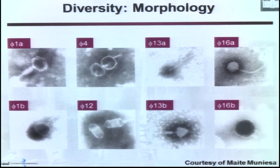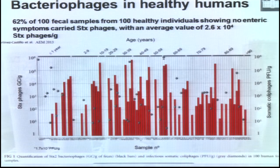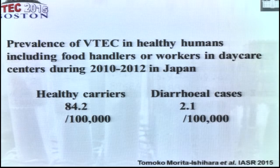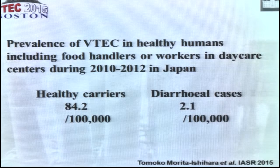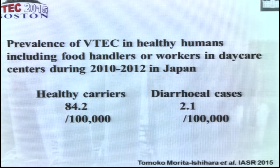Moreover, these bacteriophages are also found in healthy humans. A study done in Spain by my colleague Maite Munese showed that these bacteriophages are found in 62% of 100 healthy individuals showing no enteric symptoms, and most of them can also colonise bacterial hosts. At a recent symposium, a study from Japan during 2010 to 2012 found that healthy carriers had a prevalence of 84.2 per 100,000 compared to 2.1 in diarrheal cases — a 40-fold higher prevalence of isolated VTX bacteria in healthy carriers than in diseased patients.